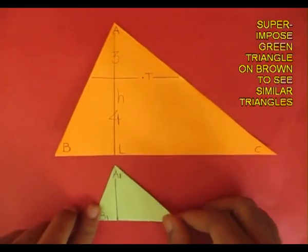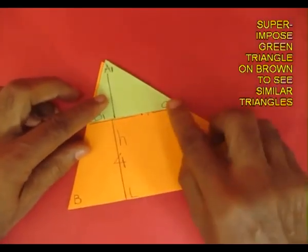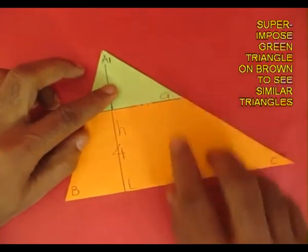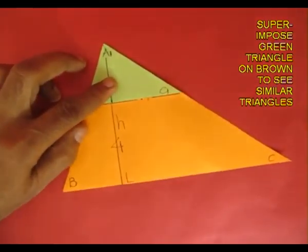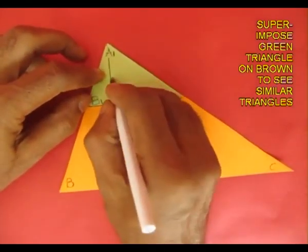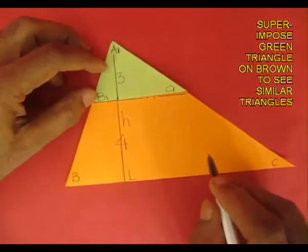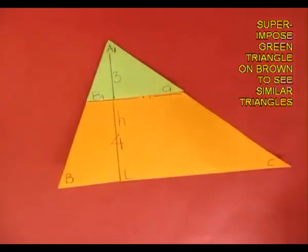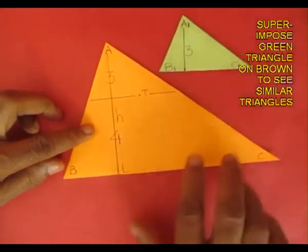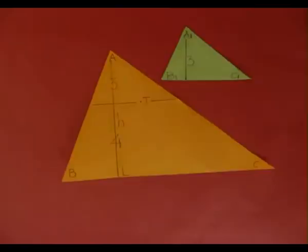Now these are the two triangles. You can take the green triangle and superimpose it on the brown one to see exactly similar triangles. The height of the green triangle is 3 and that of the brown triangle is 7.